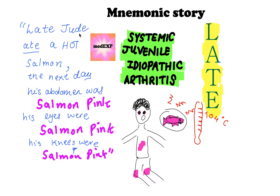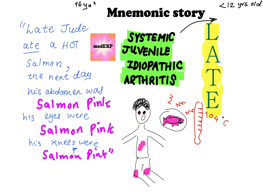So what is systemic juvenile idiopathic arthritis? This is a childhood arthritis, commonly seen in under 12-year-olds according to USMLE. But according to UK guidelines and PLAB, it typically presents in a boy younger than 16 years old.